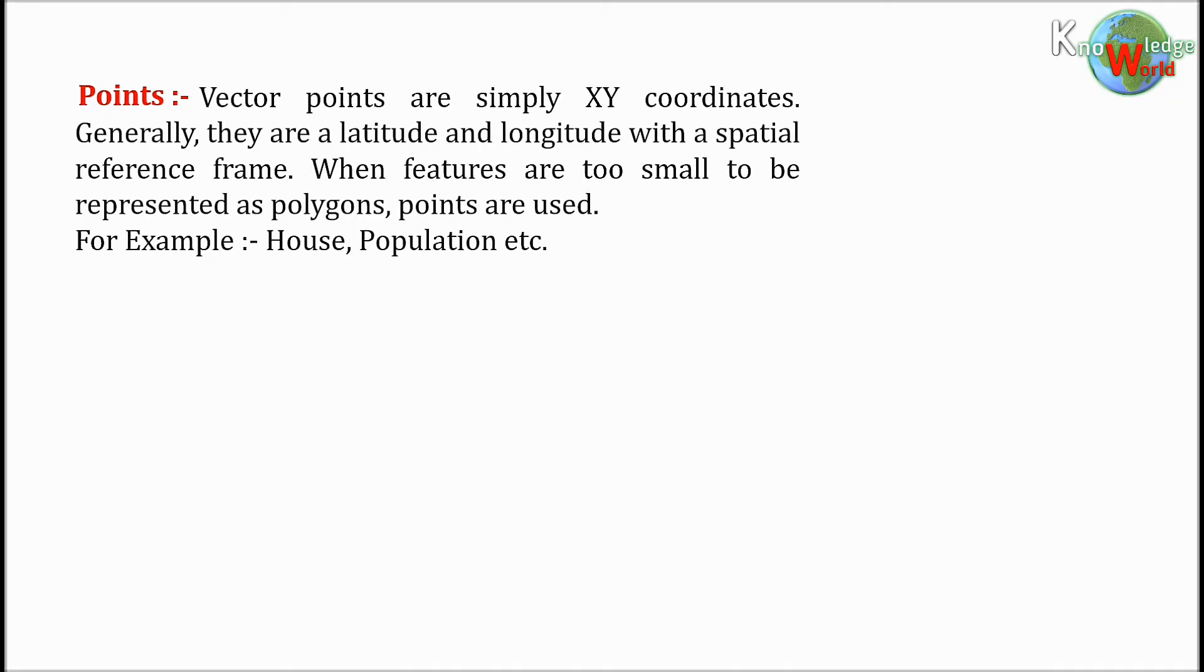Points: Vector points are simply XY coordinates. Generally, they are a latitude and longitude with a spatial reference frame. When features are too small to be represented as polygons, points are used. For example, house, population, etc.